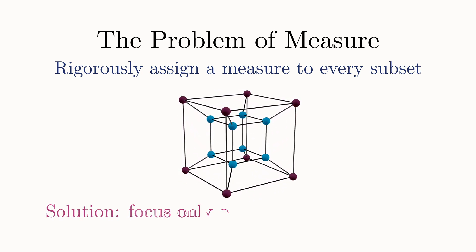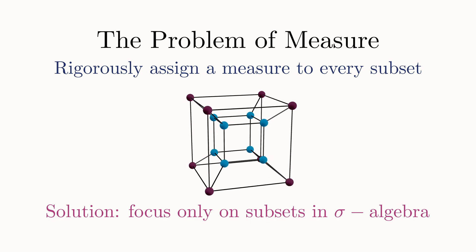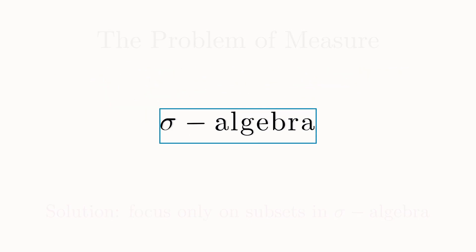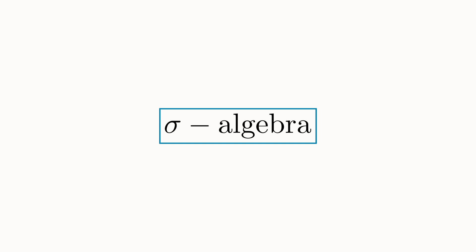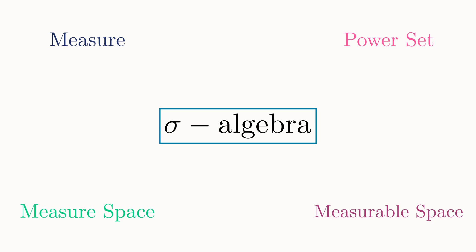The solution to this problem lies in realizing that not all subsets can be assigned a measure, but only those subsets that lie in something called a sigma algebra. A sigma algebra is the key definition underlying all of measure theory. And by the end of this video, not only will you understand exactly what it is, but you'll understand what all these other terms mean as well.